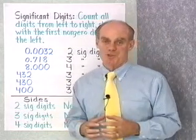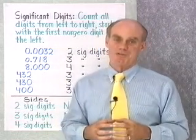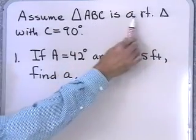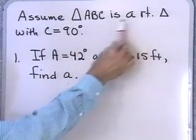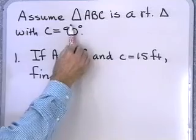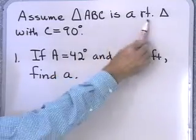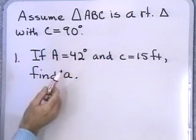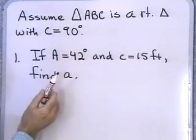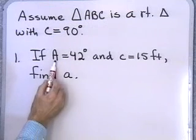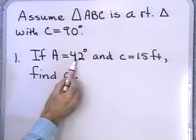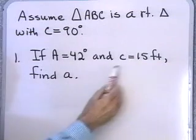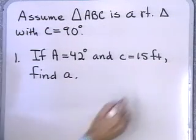Now let's go to the board and work some problems that involve triangles. We're going to assume that triangle ABC is a right triangle with angle C equal to 90 degrees for all the problems in this section. If angle A is 42 degrees and side C is 15 feet, can we find the length of side A?